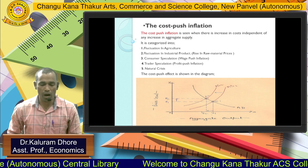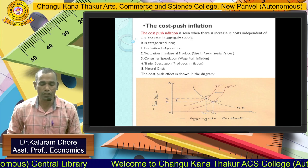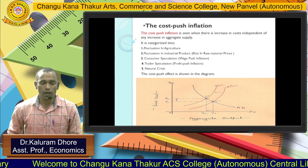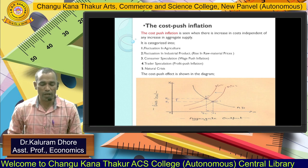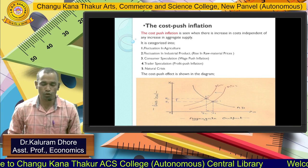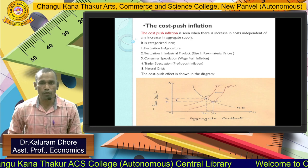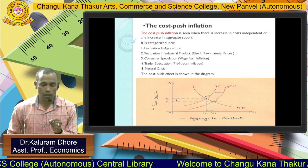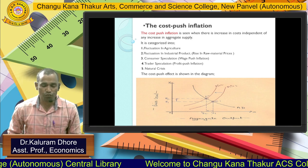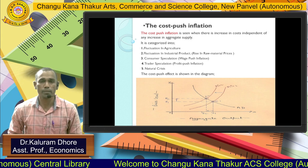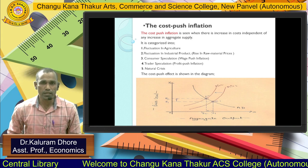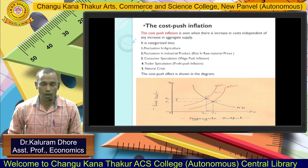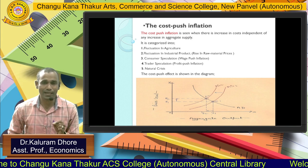Basically, we think about five causes: fluctuation in agriculture, fluctuation in industrial products, rising raw material prices, consumer speculation, wage-push inflation, trade speculation and profit-push inflation, and natural crisis. When we cover these five points in Cost-Push Inflation, we can understand this category is more relevant to natural climates.